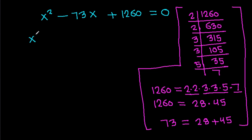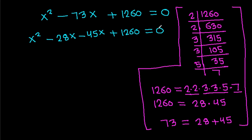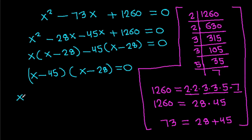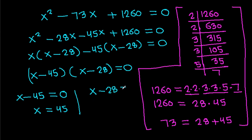So it will be x squared minus 73x equals minus 28x minus 45x plus 1260 equals 0, giving x(x minus 28) minus 45(x minus 28) equals 0. Therefore either x minus 45 equals 0 so x equals 45, or x minus 28 equals 0 so x equals 28.